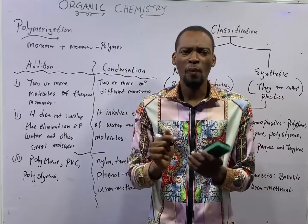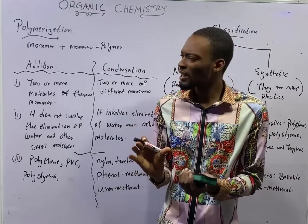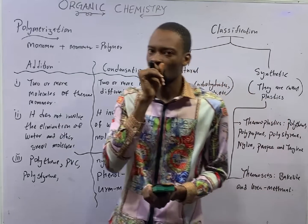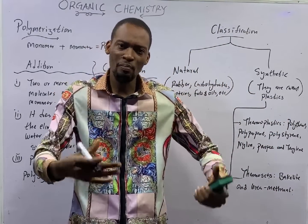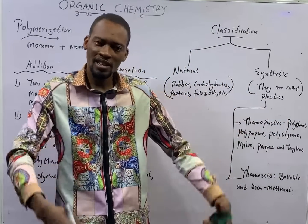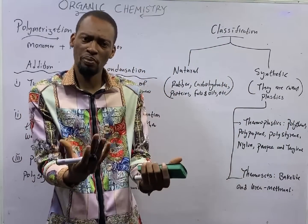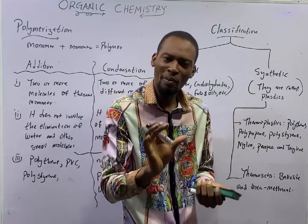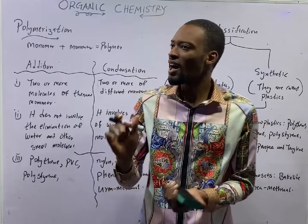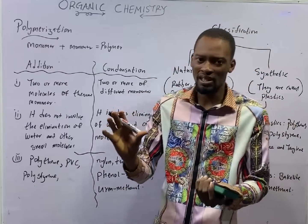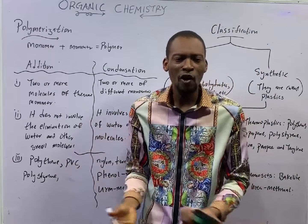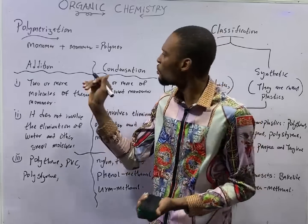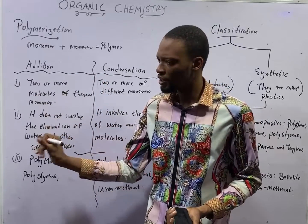For example, if you look at protein — protein is a polymer. It is a big boy, it is a buildup. The smaller molecules that make up protein are referred to as amino acids. Therefore, amino acids are the units or the monomers of protein.